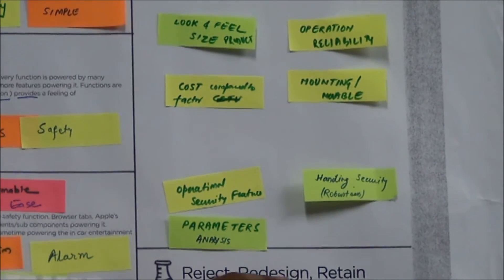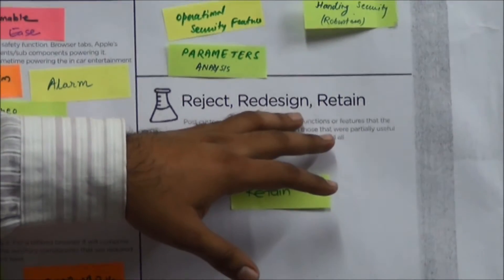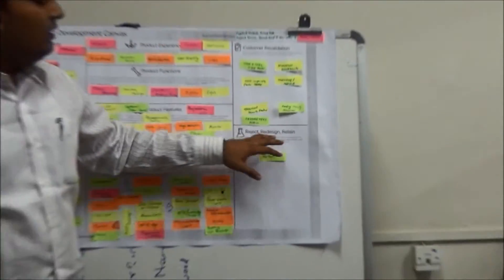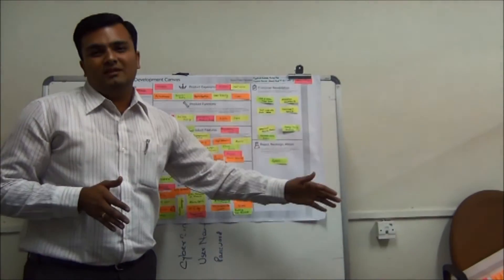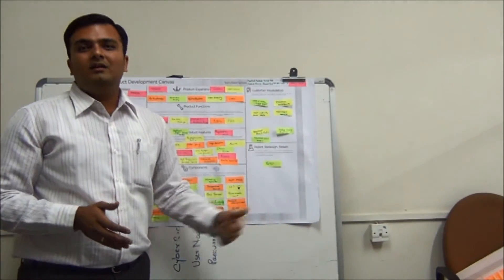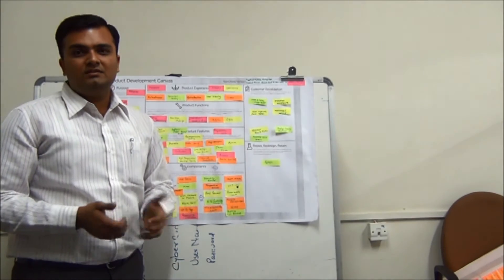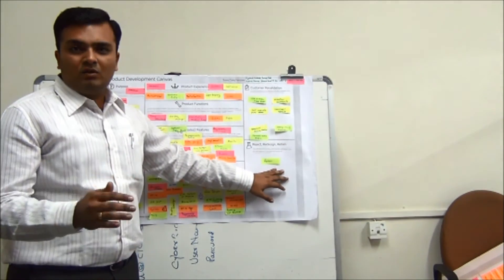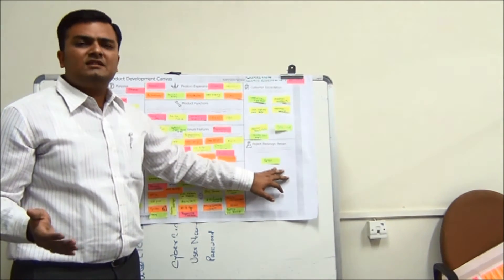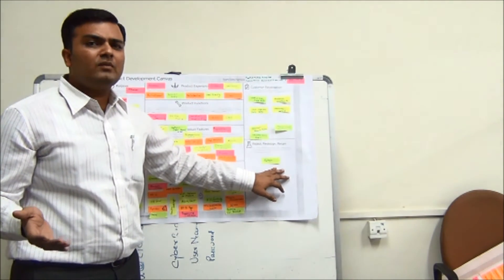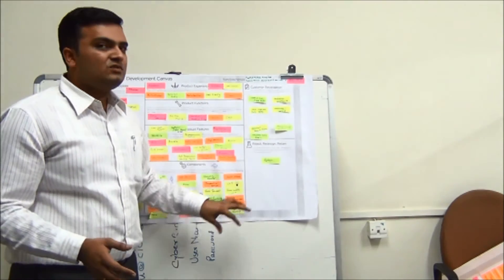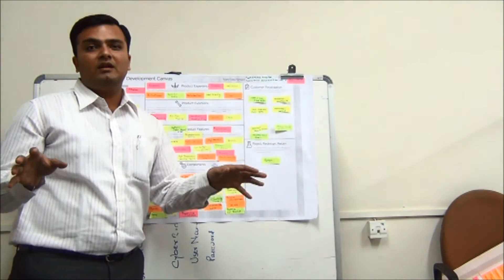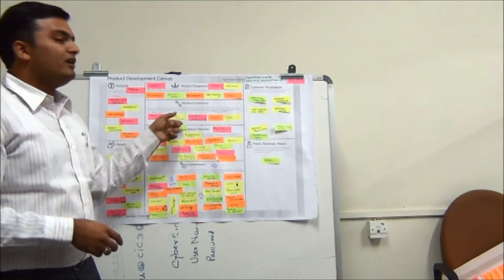At the end, you have to write down whether you would like to retain the product, modify the design, or reject the entire product. If the product concept is totally off, then the simple solution is to reject it. Here we have written that we would like to retain our product with certain modifications at a later stage, depending upon the requirement, as this canvas focuses on versatile product development for the attendance process.